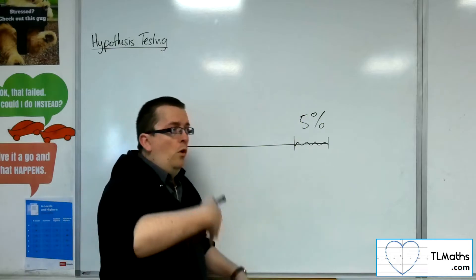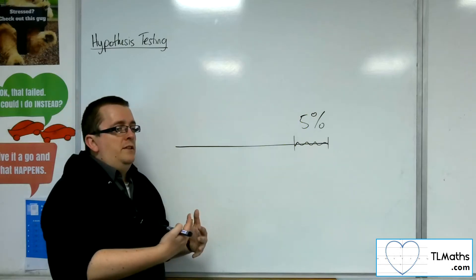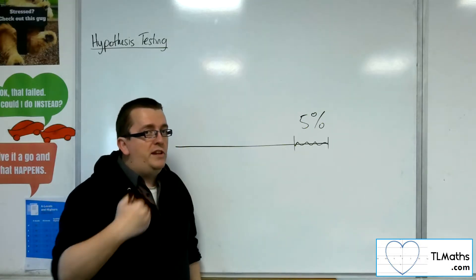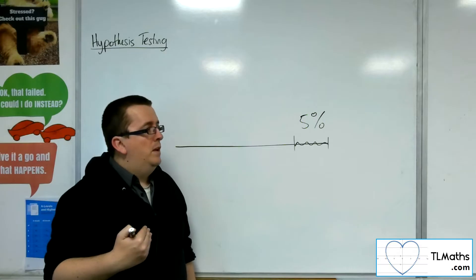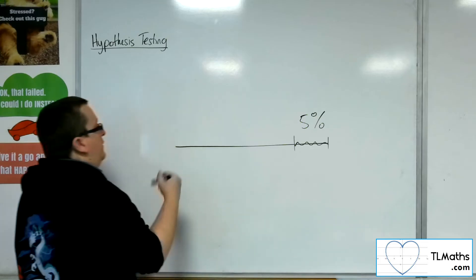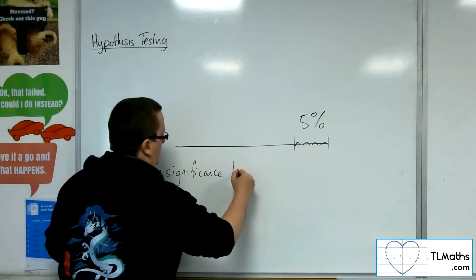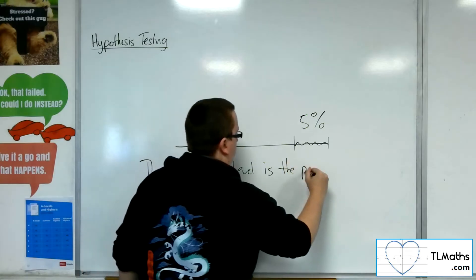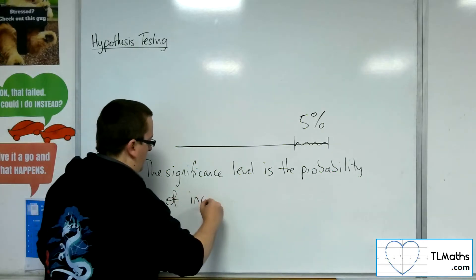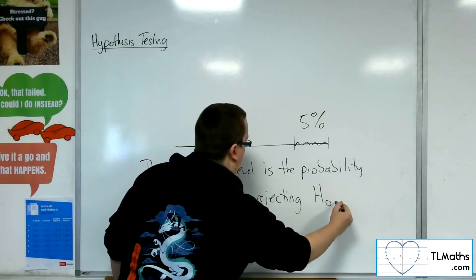Now, what that then also means is that even if you collected enough evidence that got you into that significance region, the null hypothesis could still be correct. It could still be correct, and so what you have here, if you wanted a definition for the significance level, the significance level is the probability of incorrectly rejecting the null hypothesis.